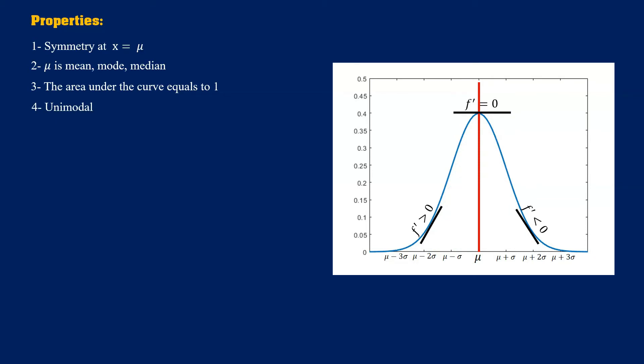In other words, its first derivation is positive for all of the points smaller than mu. It's negative for all of the points greater than mu. Moreover, the figure has two inflection points, where the second derivation equals 0. These points are exactly at the points mu minus sigma and mu plus sigma.